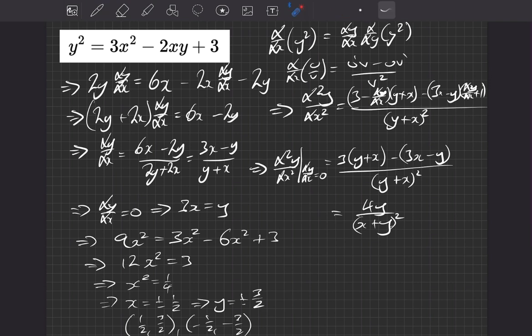So now we want to substitute in our turning points into this thing, and see what we get on the other side. So if we stick in the first one with positive values, so a half and 3 over 2, what do we get? Well, 3 over 2 times by 4 gives us 6. And the bottom then, if we add the two together, we get 2. Square it, we get 4. Simplifying that, we have 3 over 2, which is positive, so that tells us this was a minimum.